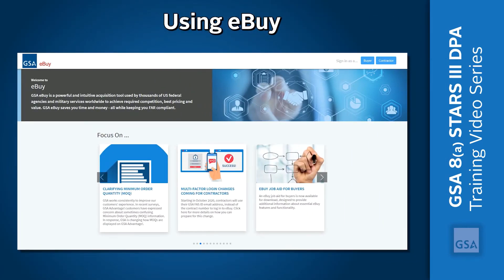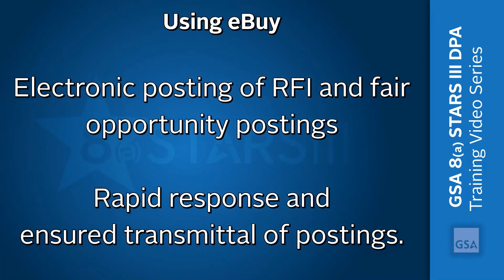GSA has a variety of resources for helping the OCO order against a GWAC. One of the main resources is eBuy, GSA's online request for quote and request for proposal system. You can request information, find sources, and prepare for RFQs and RFPs in eBuy. GSA's eBuy is the preferred system for RFI and fair opportunity postings. eBuy provides electronic posting of RFI and fair opportunity postings, rapid response, and insured transmittal of postings.